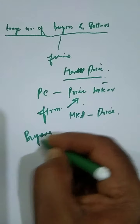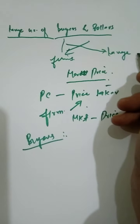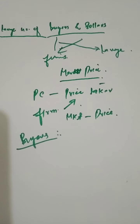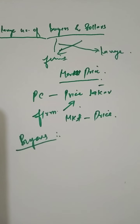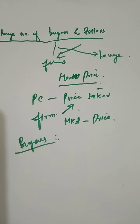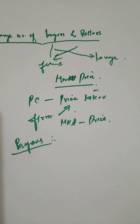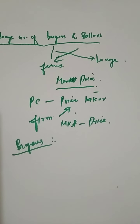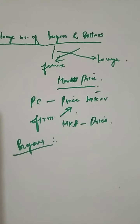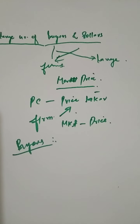The number of buyers under perfect competition is also very large — so large that no buyer by their individual action can affect the market price. So in perfect competition, not only is the number of sellers very large, but also the number of buyers is very large. Accordingly, an individual buyer is also not able to influence the price of the commodity.